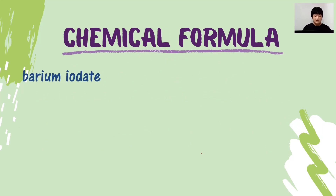How do we identify the chemical formula if the name is given? First and foremost, we separate the compound into cation and anion. We identify who is the cation and who is the anion. In this example — barium iodate — the cation is barium and the anion is iodate. Barium is Ba 2 positive.